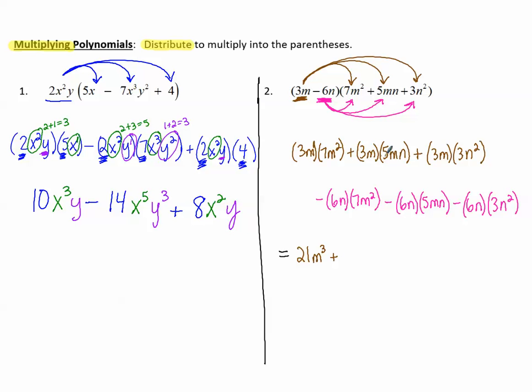Plus 3 times 5 is 15. m times m is m² times n. Plus 3 times 3 is 9. m times n².